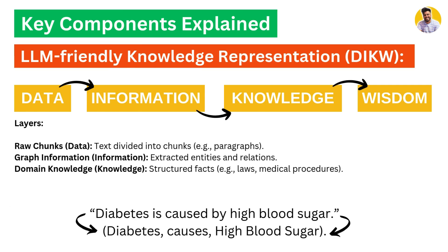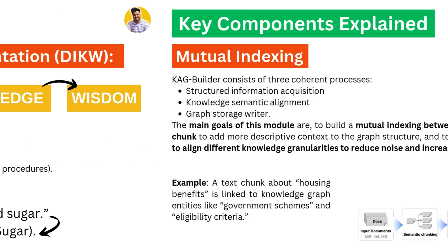When data comes into CAG, it first extracts information, then makes knowledge, and from the knowledge it generates wisdom. Text is divided into chunks, and those chunks are converted into a graph so we can know the relationship between each entity, word, or person mentioned. For example, 'diabetes is caused by high blood sugar' is divided into its parts so the system can reason about the text.